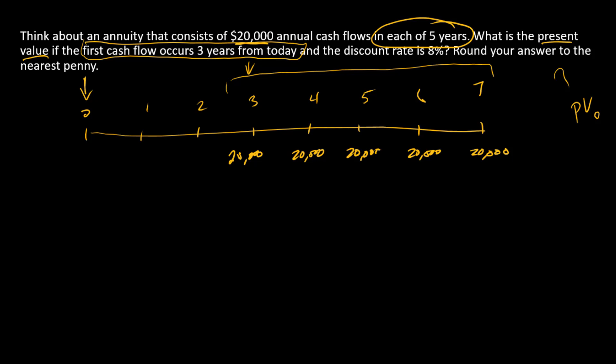We've got formulas that we use for many of our time value money calculations, and one of those is a formula for an ordinary annuity. That tells us the present value as of one period prior to the first payment, so our out-of-the-box annuity formulas take us to right here on the timeline.